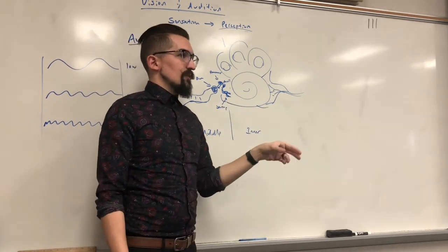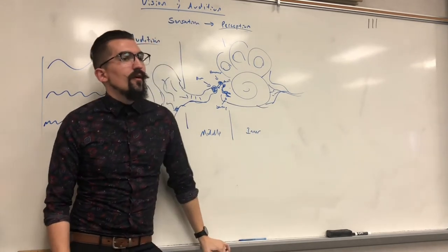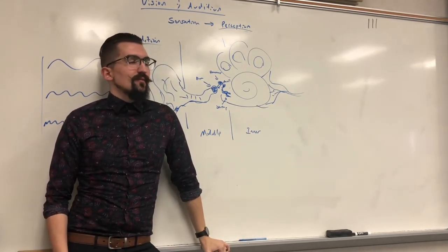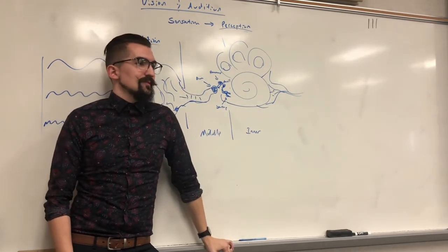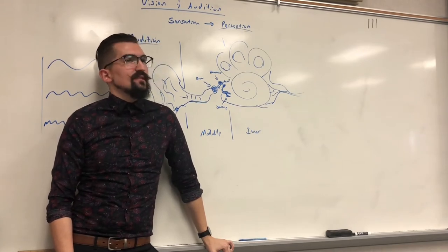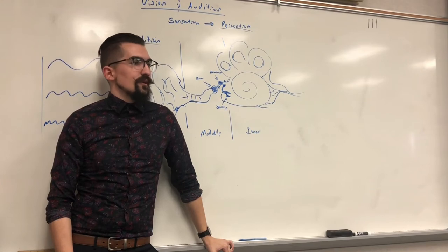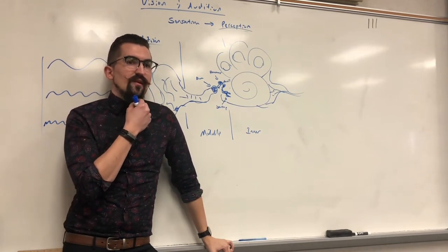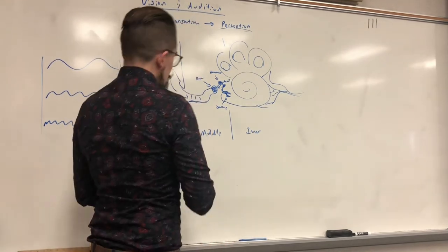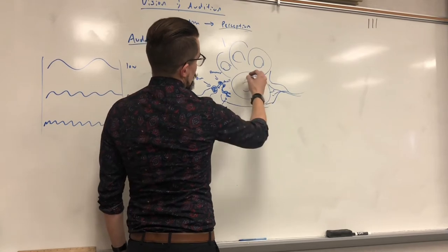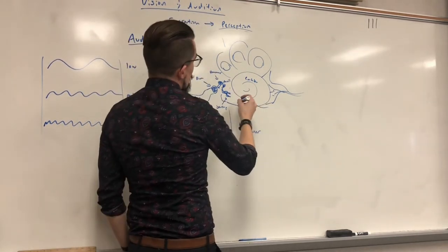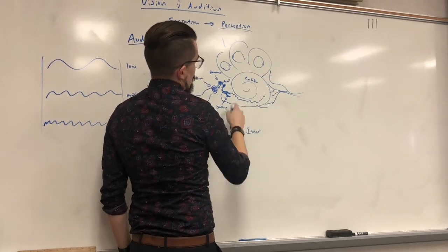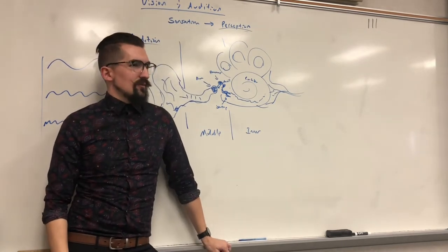Why do we need the stirrup at all — why can't the sound waves just come straight in? The stirrup is actually connected to your cochlea. You may have heard of a cochlear implant — that's when they put a device in to mimic one of these functions. Inside the cochlea there's a fluid. What the stirrup does is jostle that fluid more accurately than if it was just a raw sound wave.